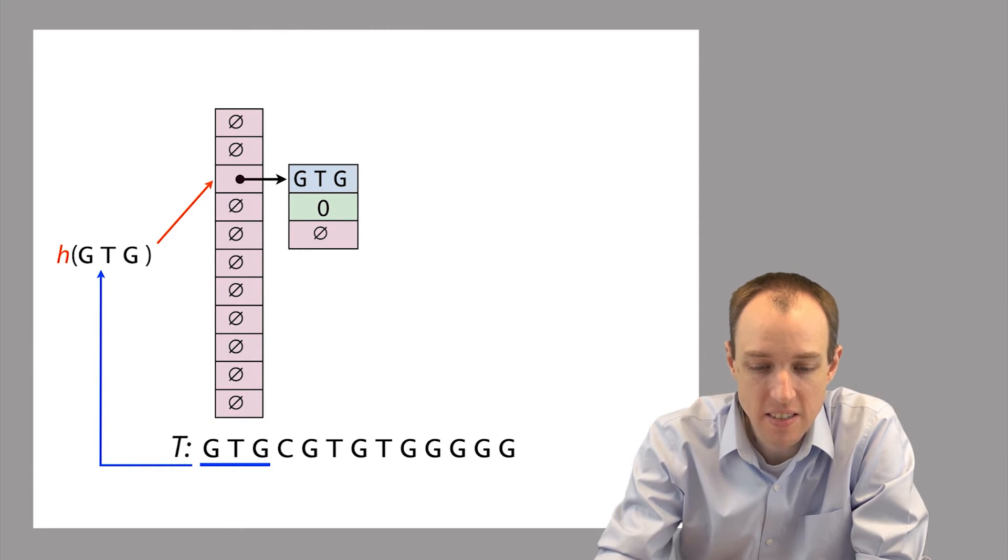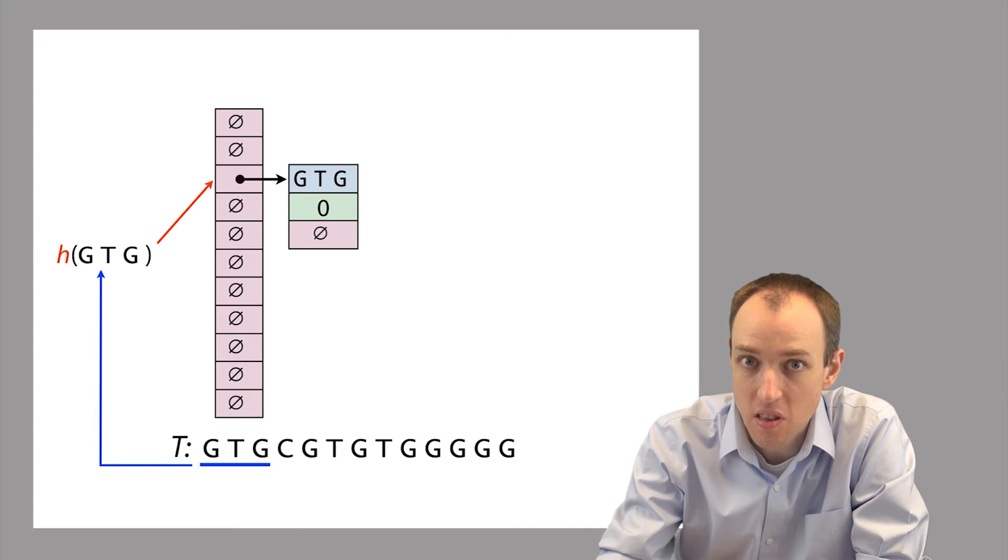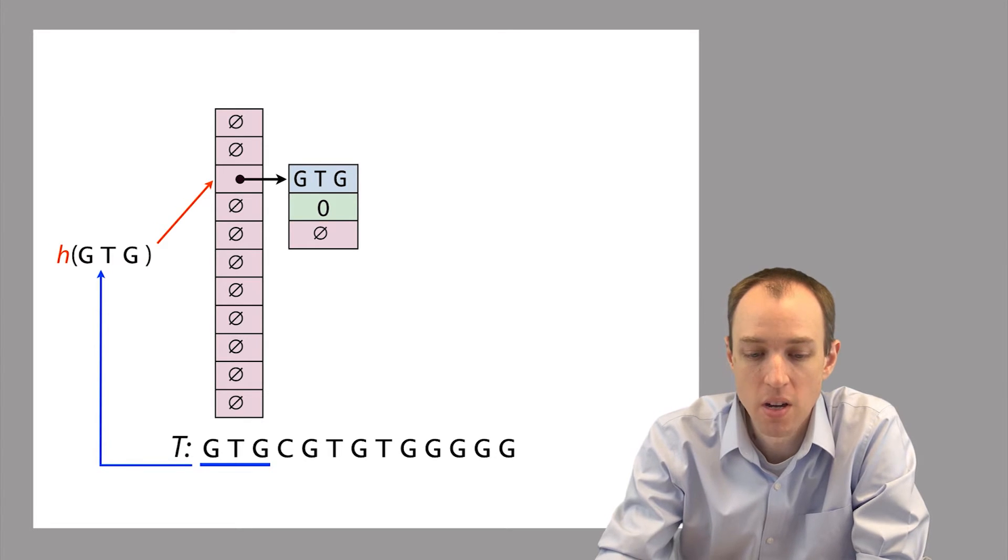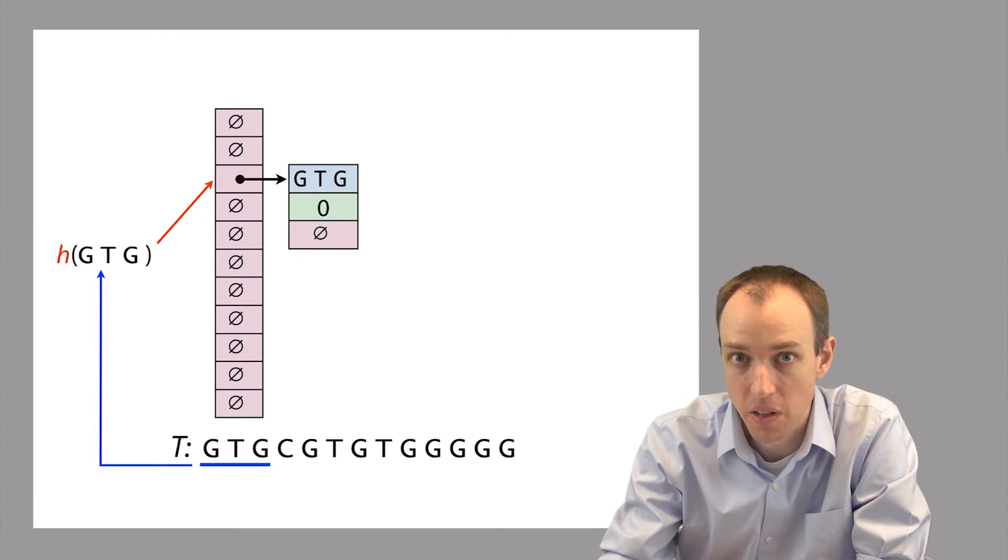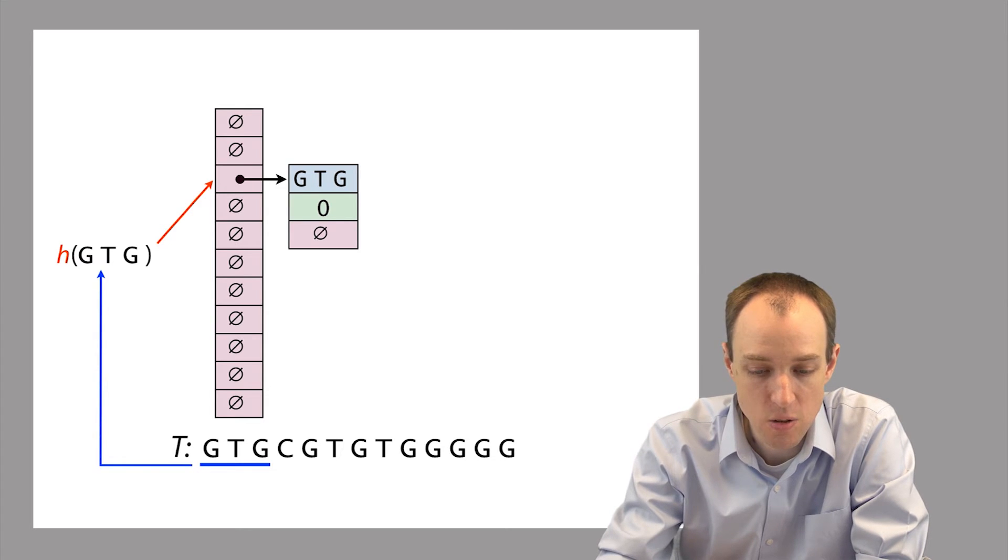And the entry consists of a key, which is the 3mer, which is highlighted in blue here. And then a value, which is the offset from which we got that 3mer, which is shown in green here. And then a null reference, which is shown in pink. And so if we add some more entries later, we add them onto the end of the list by expanding on this null reference here.